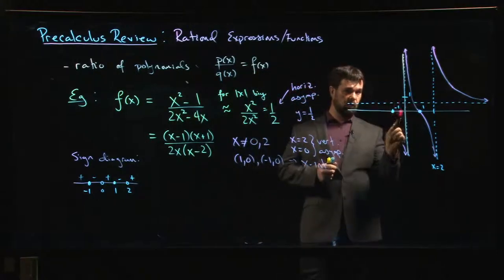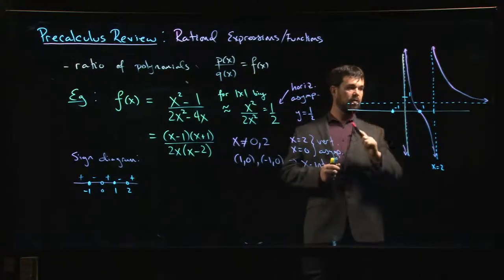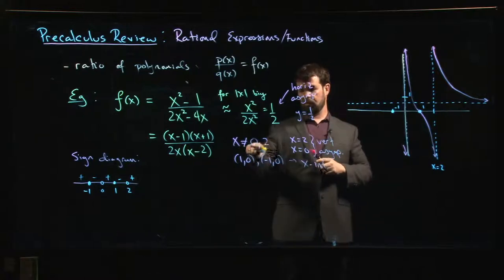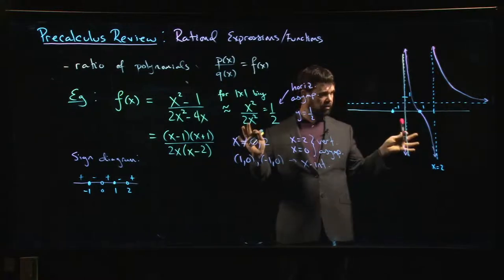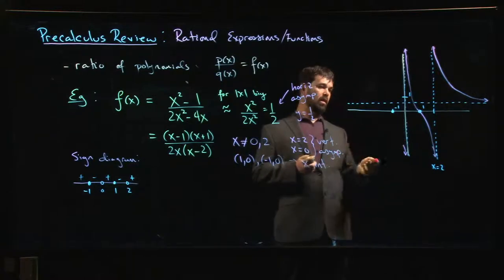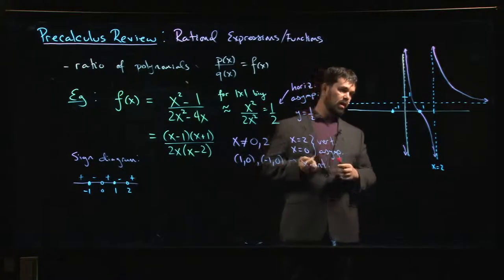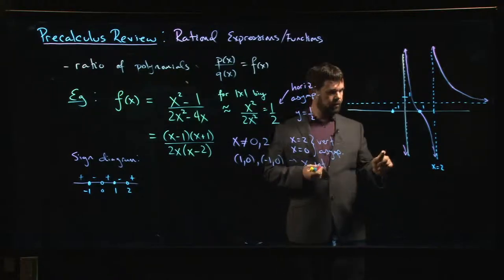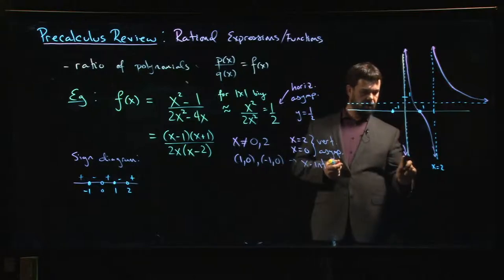Notice by the way you are allowed to cross horizontal asymptotes. Vertical asymptotes you can't cross because those x values are not in your domain. There's nothing stopping you from going across a horizontal asymptote. So the last one is minus one, so now I know I've got to come up.